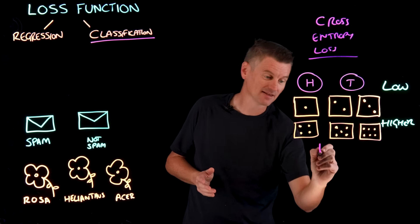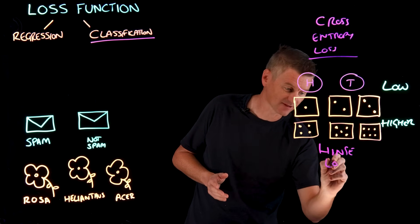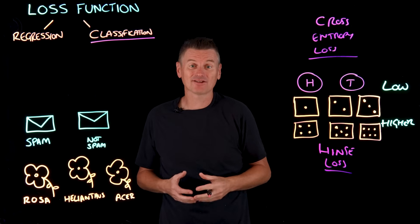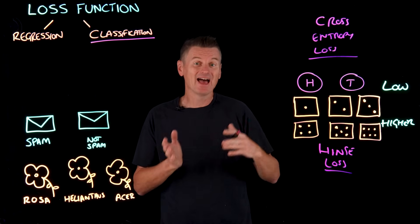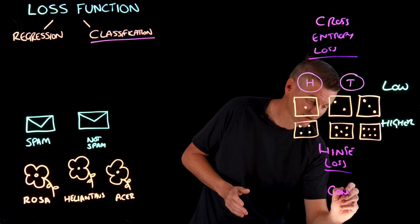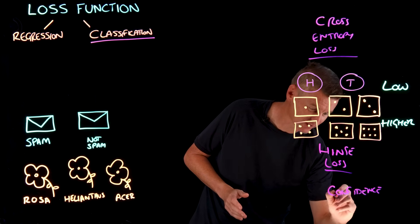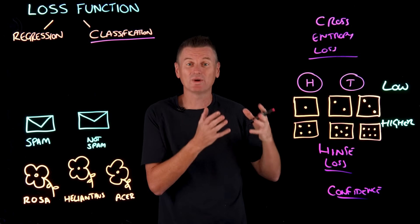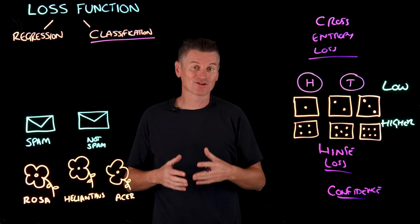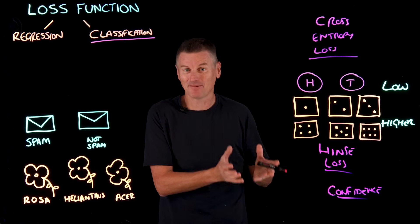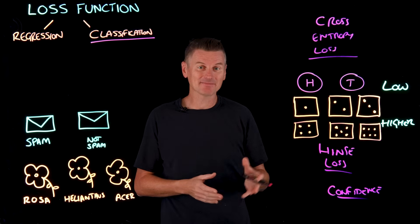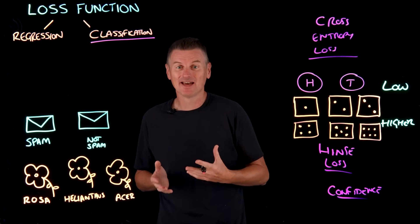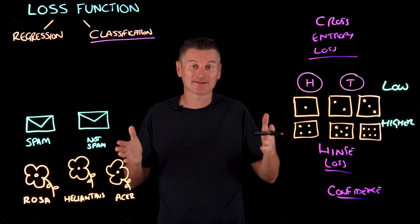An alternative to this is called hinge loss instead. This is commonly used in support vector machines. Hinge loss encourages the model to make both correct predictions and to do so with a certain level of confidence. It focuses on maximizing the margin between classes with the goal that the model is not just correct, but confidently correct by a specified margin. This makes hinge loss particularly useful in binary classification tasks where the distinction between classes needs to be as clear and as far apart as possible.